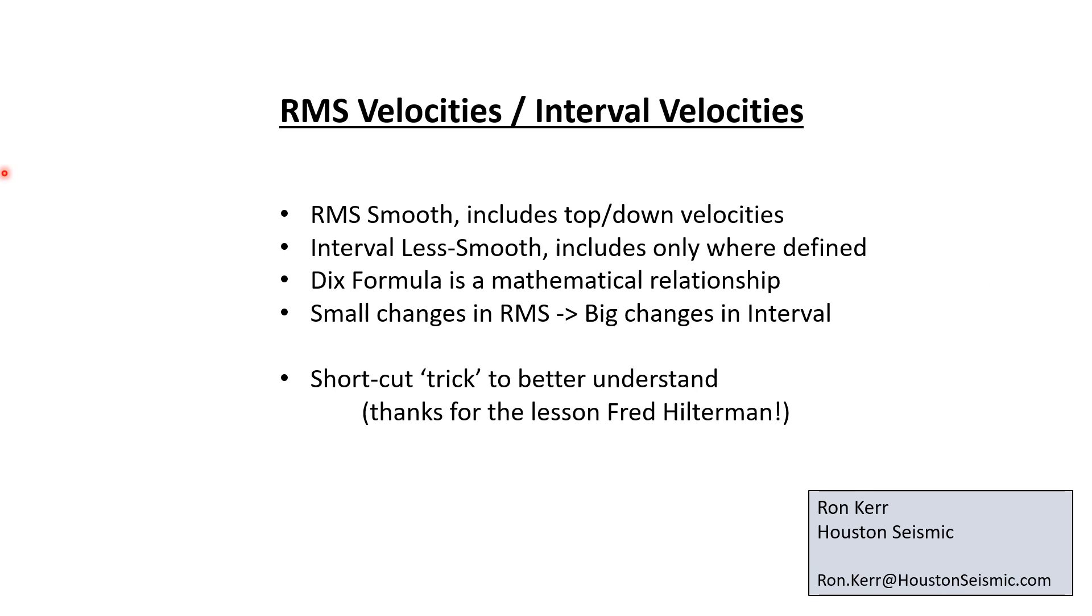So, to summarize, RMS velocities, which are used often in time migration or to flatten gathers in the time domain, they are usually very smooth because it's more of an averaging. It includes velocities from all the way top to down. Interval velocities tend to be less smooth because they only include the interval in which you're defining the velocities. The Dix formula is the mathematical relationship. Small changes in RMS can lead to big changes in interval. And the shortcut trick of drawing a box around is a way that I use to help better understand the relationship.